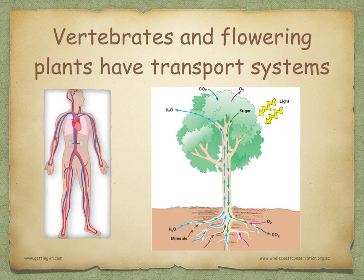Vertebrates and flowering plants are large organisms, and they need transport systems to carry substances, for example food and water, throughout their bodies. These transport systems move fluids through tubes so that all of the fluid moves in the same direction within each tube. This type of transport is called mass flow.